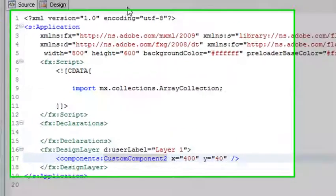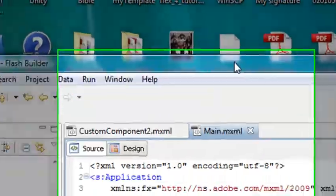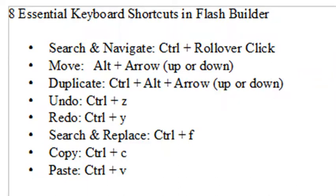Let's go back to main and move to the next keyboard shortcut. The next shortcut is extremely useful — it's the Alt plus arrow keyboard shortcut. This is useful for moving code around. Let's take a look and see how it works.